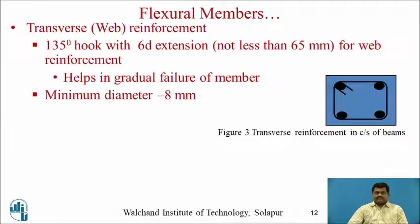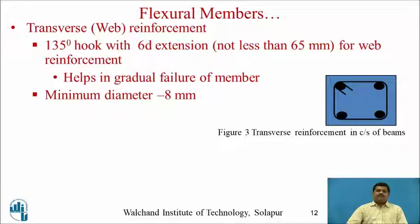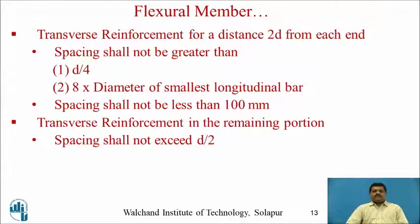For transverse reinforcement, hoops must have a 135-degree hook — bent first 90 degrees then an additional 45 degrees — extended by at least 6 times the bar diameter or 65 mm, whichever is greater. This ensures gradual failure. The minimum hoop bar diameter is 8 mm. Transverse reinforcement must be provided over twice the depth of the section from each end, with spacing not greater than d/4 or 8 times the diameter of the smallest longitudinal bar, and not less than 100 mm.